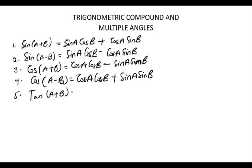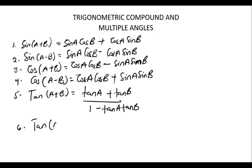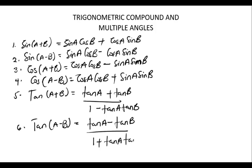For tan(A + B), the expansion is: tan A plus tan B, divided by 1 minus tan A tan B. For tan(A − B), the numerator has a minus sign: tan A minus tan B, divided by 1 plus tan A tan B. We need to remember these six expansions when solving problems related to compound angles in trigonometry.